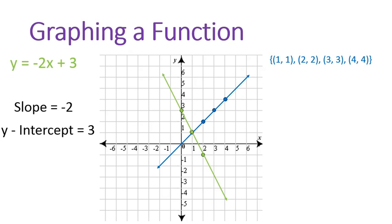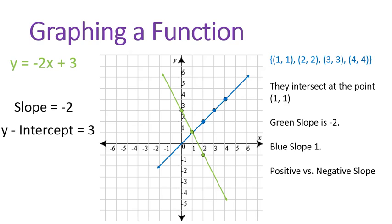After graphing the equation and the list of points, you can make some interesting comparisons similar to what we did before. They intersect at the point 1, 1. The green has a slope of negative 2. The blue has a slope of positive 1. It's a positive slope versus a negative slope. You can see that when you look at them. And I like the color green better. Whatever you're asked to compare, you can compare when you're graphing them. Again, take an equation and a list and put them both on the same graph. That way you can compare apples to apples.